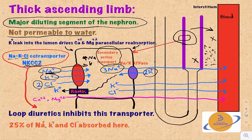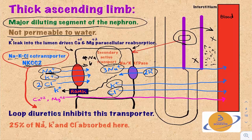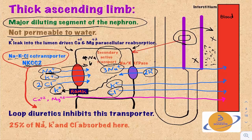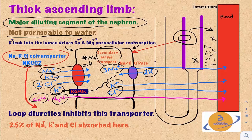At the same time, some potassium and chloride move into the medullary interstitium along their concentration gradient. Another important apical channel is ROMK — the renal outer medullary potassium channel — which actively moves potassium from inside the cell into the tubular lumen. This movement creates an electrochemical gradient that drives calcium and magnesium reabsorption via paracellular transport from the lumen into the interstitium.